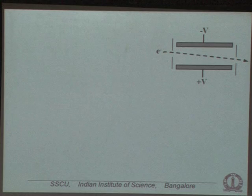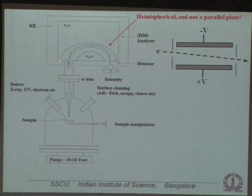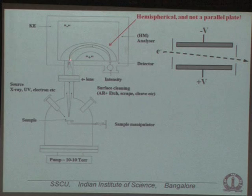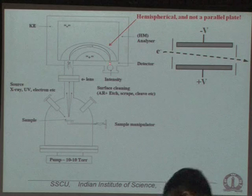In practice, the parallel plate capacitor is made hemispherical rather than flat, for technical reasons. In the hemispherical analyzer, you have two hemispherical surfaces with a gap between them — positive voltage on the outer hemisphere, negative on the inner. Electrons enter from one side. The hemispherical geometry provides spatial focusing: electrons with the same kinetic energy but entering at slightly different angles are refocused, so no electrons of that kinetic energy are lost. This is the key technical advantage.